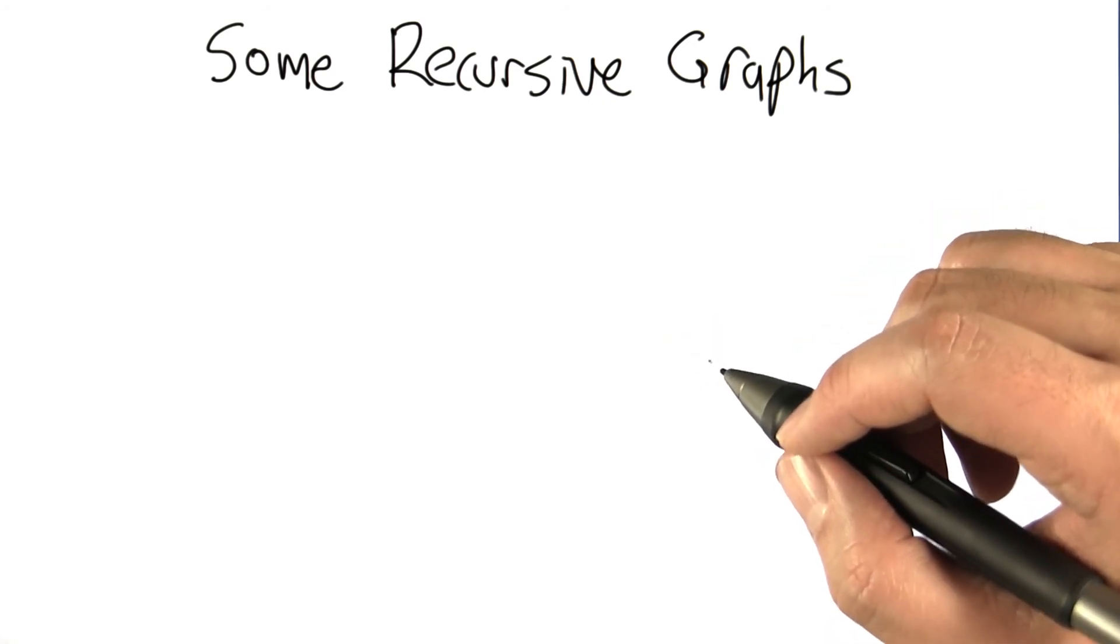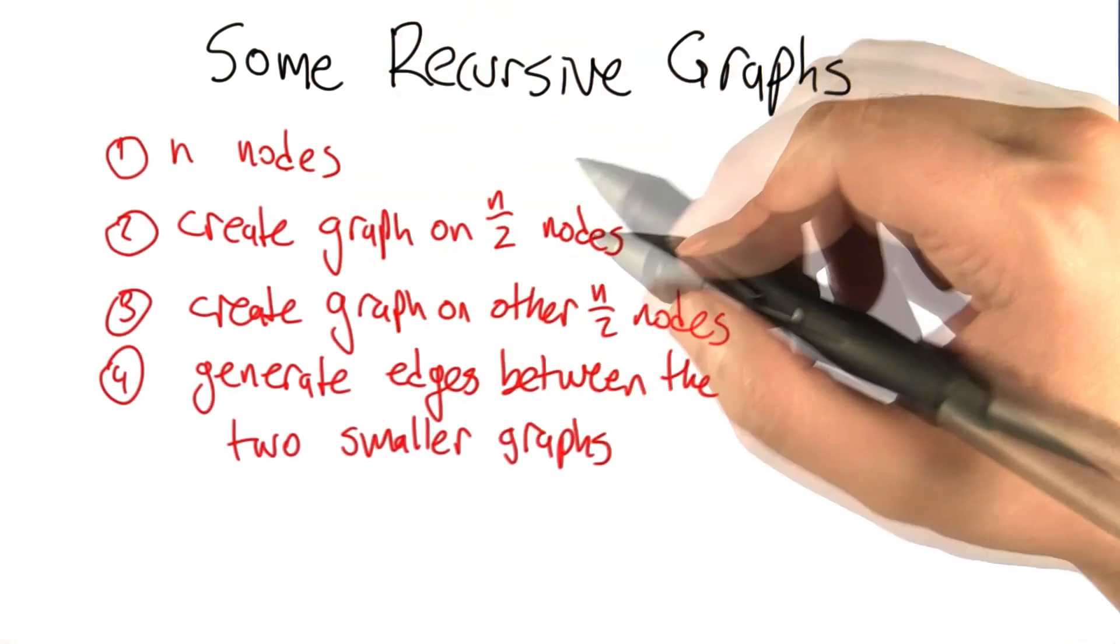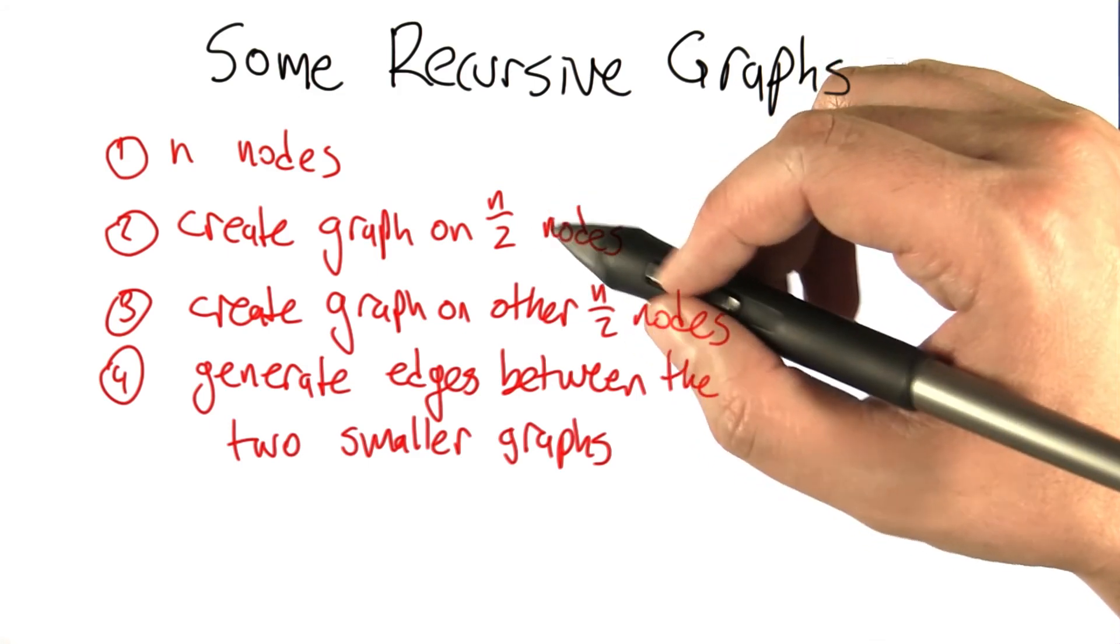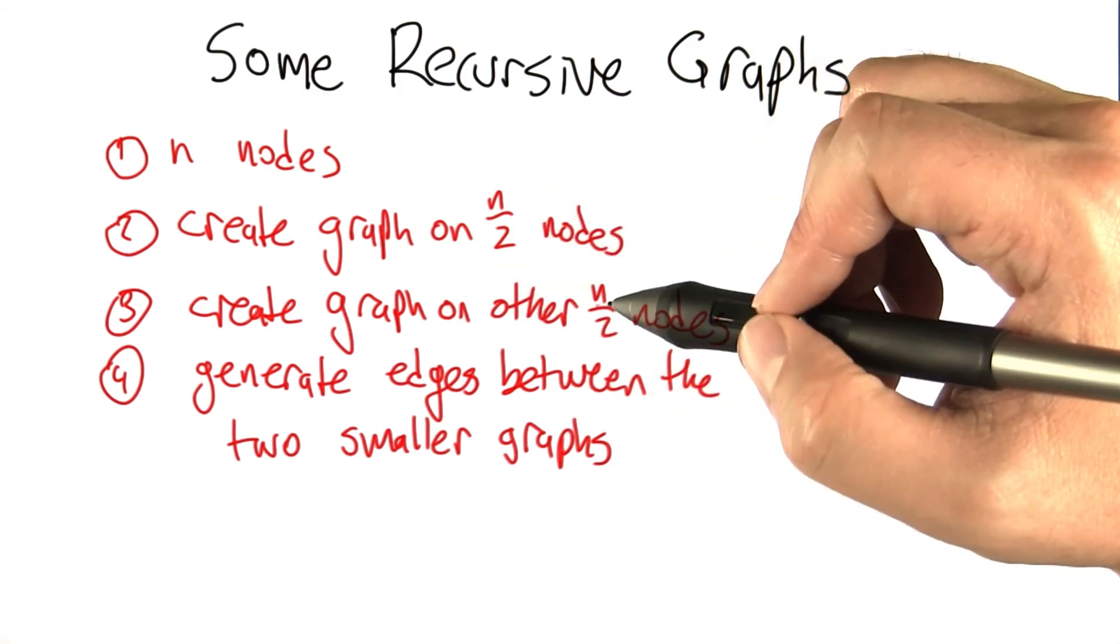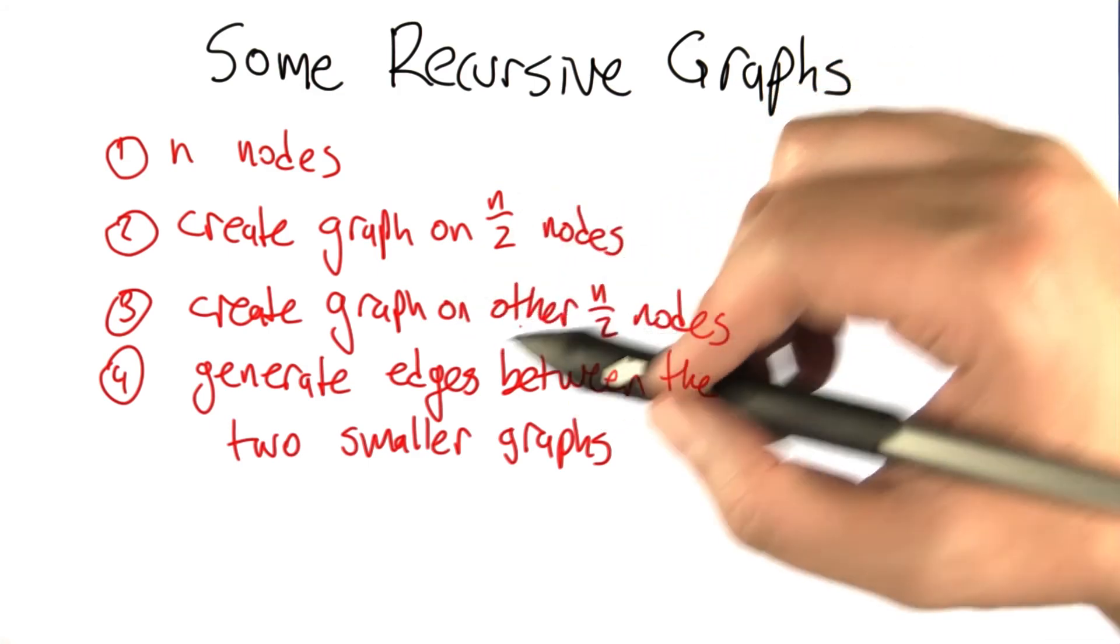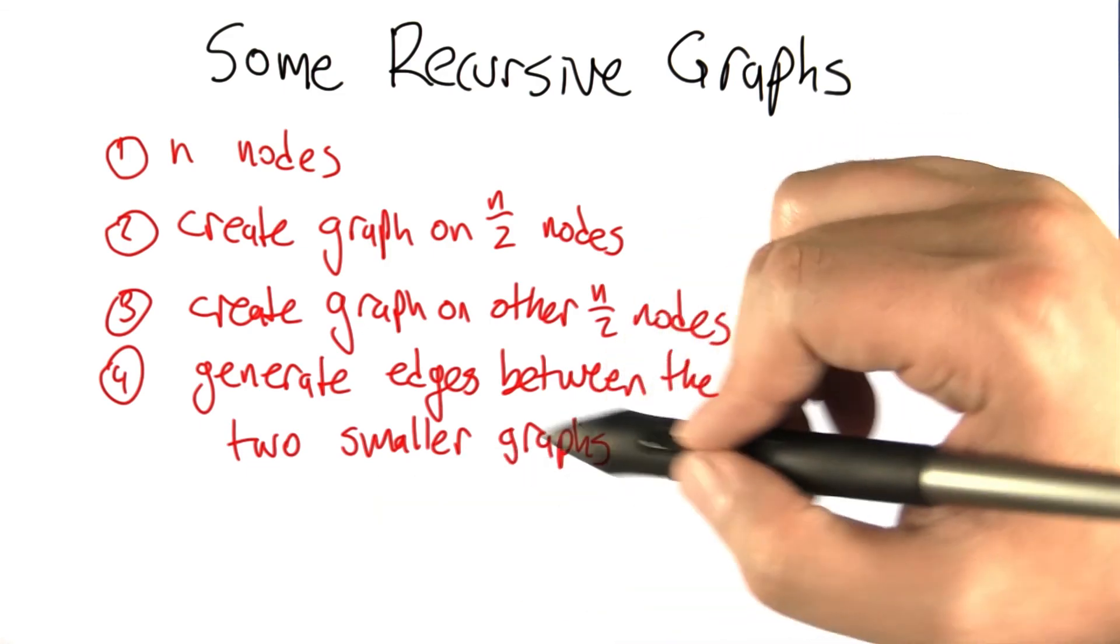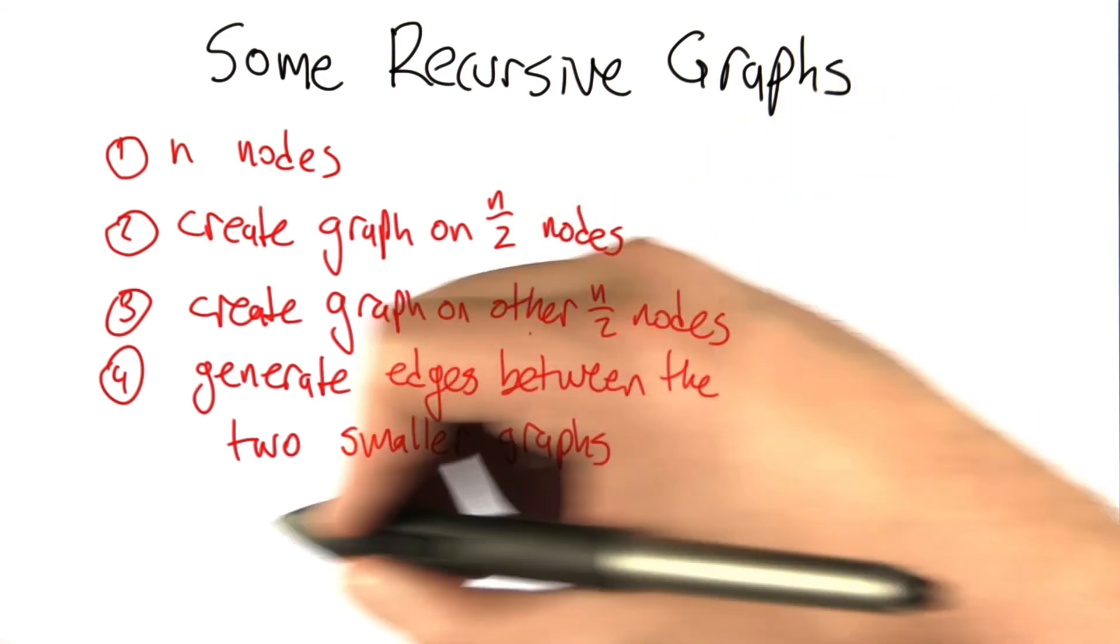Alright, so next we're going to look at some recursively generated graphs. We start off with a set of n nodes, then we create a graph on half of the nodes recursively. We create a graph on the other half of the nodes recursively. Then we generate some edges that connect up between these two smaller graphs, and that's the graph that we return.